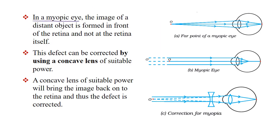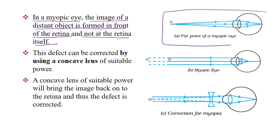In a myopic eye, the image of a distant object is formed in front of the retina, and not at the retina itself. If our eye is normal, the image falls on the retina. But in a myopic eye, the image forms slightly in front of the retina instead of on it.